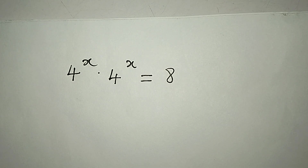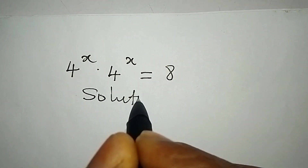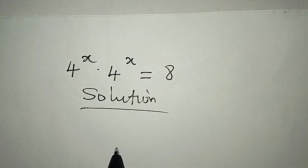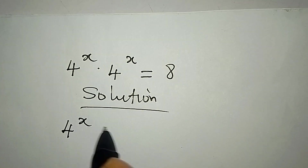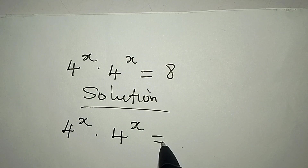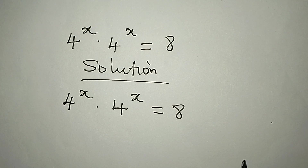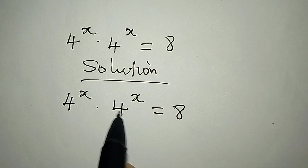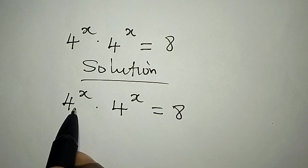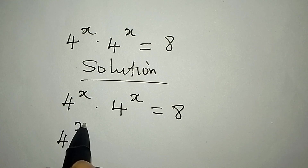Hello everyone, let's provide the solution to this problem. So we have 4 to the power of x multiplied by 4 to the power of x equals 8. Can this be possible? The answer is yes, because when you have the same base, you pick one of them and then add the powers.